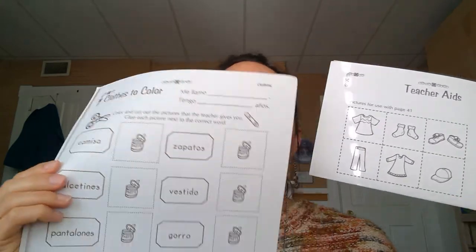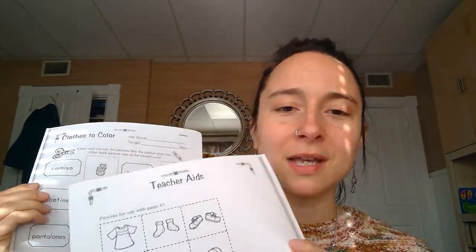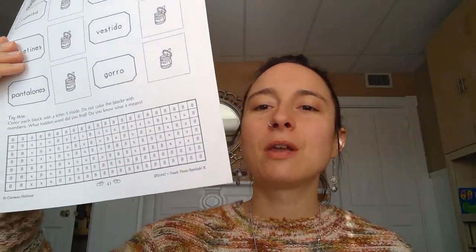So this one says camisa, and you're going to find camisa in your book like this. What is camisa? Camisa is a shirt, so then you will find the shirt right here and cut it out and glue it next to the word camisa.